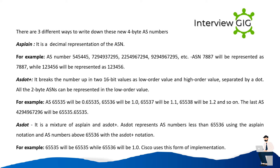ASDOT is a mixture of ASPLAIN and ASDOT+. ASDOT represents AS numbers less than 65,536 using ASPLAIN notation and AS numbers above 65,536 with ASDOT+ notation. For example, 65,535 will be 65,535 while 65,536 will be 1.0. Cisco uses this form of implementation.